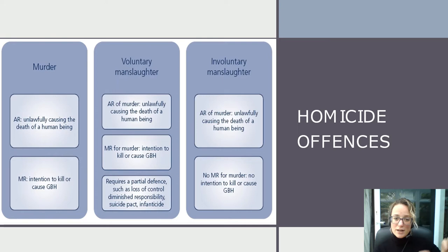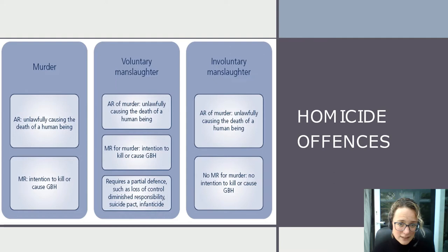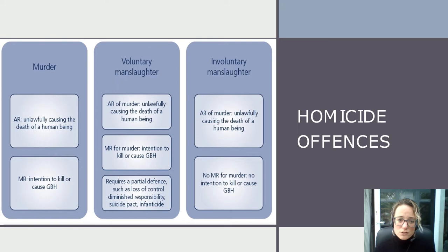Every offence has an actus reus and mens rea, but different offences will have different words and definitions of exactly what the actus reus is, or needs to be, and the same with the mens rea. The third element is that even if you can show the actus reus and mens rea are present, it doesn't mean automatically that criminal liability exists — we then have to consider whether there is some sort of defence available, and that defence can sometimes reduce or entirely eliminate that criminal liability. Criminal law, when you look at the specific offences, is actually very technical and very specific, and murder is certainly no exception to that.